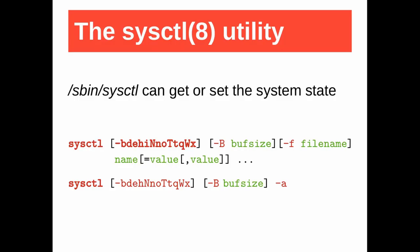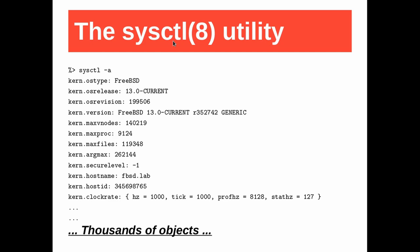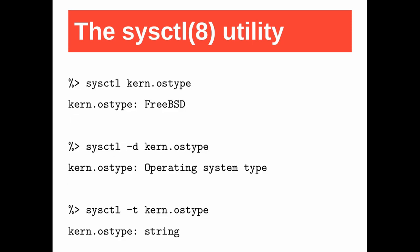FreeBSD also provides a sysctl utility that wraps the system call. Both have the same name. The utility is documented in section 8 of the manual. With the -a option, sysctl shows every object. Nowadays the MIB has thousands of objects. sysctl does not show the internal nodes, only the leaves — I'll describe the reason later. sysctl can print one object by its name, its value, its description, its type. The manual describes all the options.